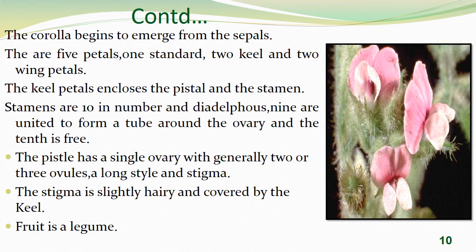As in other legume crops, the keel petal encloses the pistil and the stamens. Stamens are 10 in number and diadelphous — nine are united to form a tube around the ovary and the tenth is free. The pistil has a single ovary with generally two or three ovules, a long style and stigma. The stigma is slightly hairy and covered by the keel. The fruit is a legume.